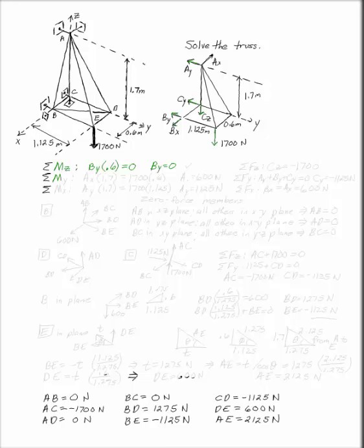Now take the sum of the moments about the Y axis. Again, the only reason to do it backwards is for convenience. Now AX at this point will spin the Y axis because it acts perpendicular to the Y axis at a distance of 1.7 meters. The other thing that would spin your hand if you put your thumb along the Y axis would be the 1700 newton load. And that distance for the 1700 newton load would be 0.6. They're going to spin the Y axis in opposite directions. So one has to be equal to the other and AX has to be equal to 600 newtons.